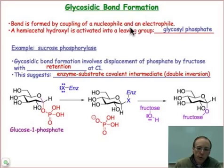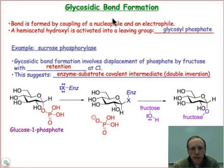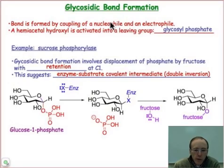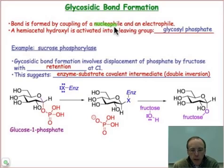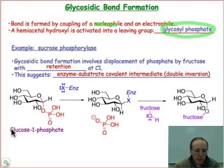One of these sugars is going to be a nucleophile and the other will be an electrophile. Just like every other organic reaction, there's a nucleophile and electrophile involved — in this case, two monosaccharides. The nucleophile is a hydroxyl group on one of the monosaccharides, and the electrophile is a glycosyl phosphate, such as glucose-1-phosphate that you can see here.